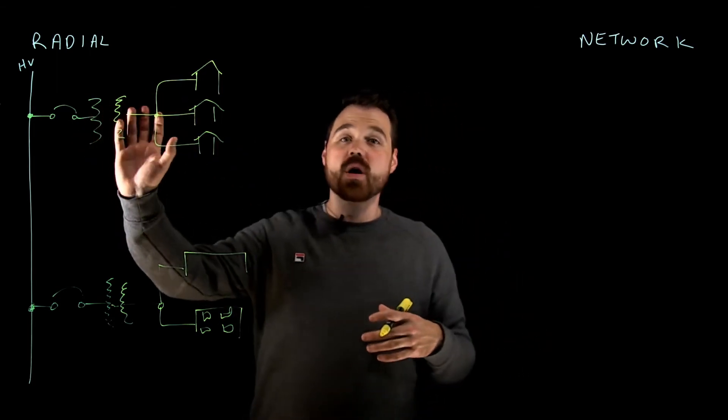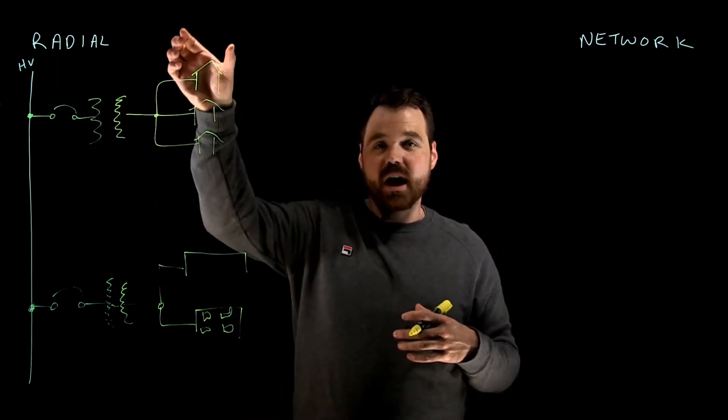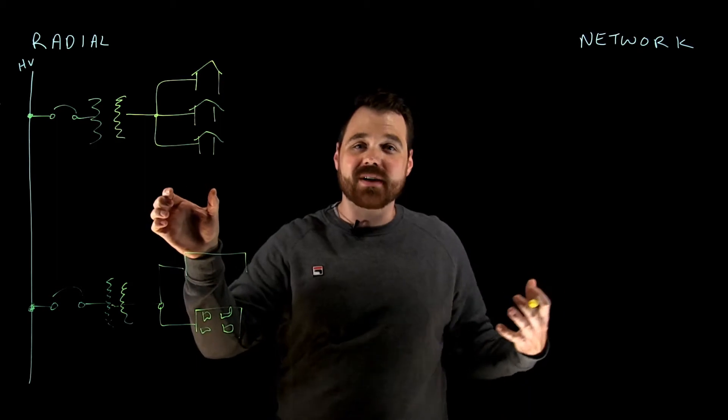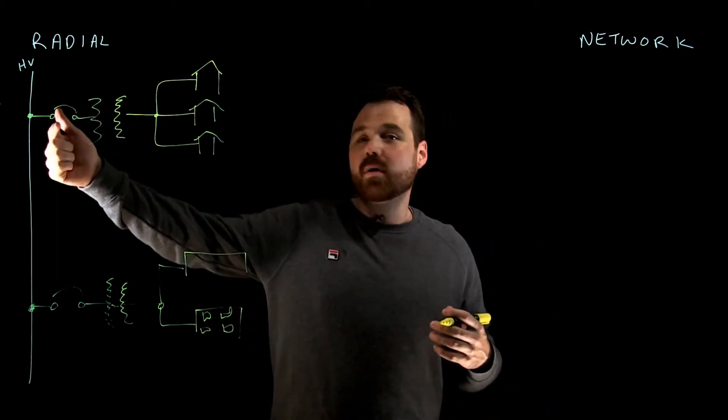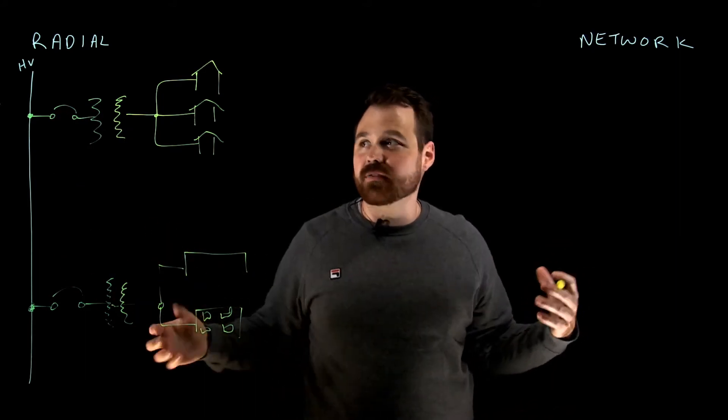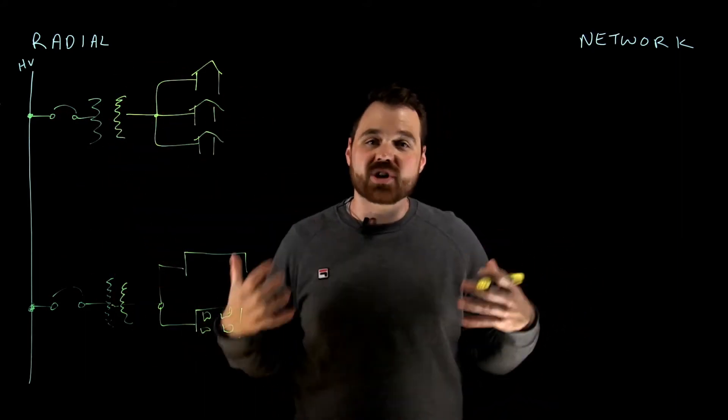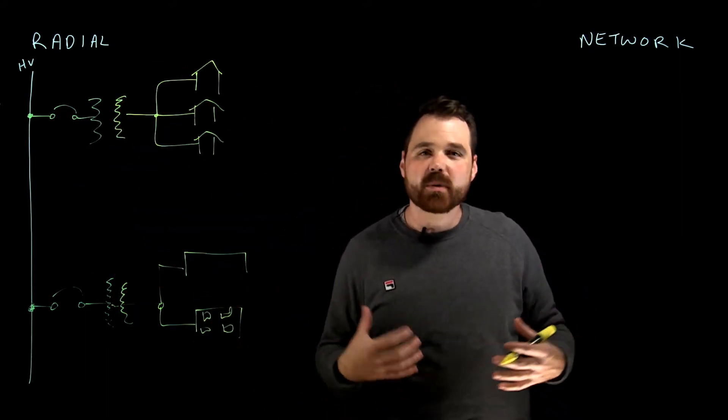Now the idea here being, if something goes wrong with this transformer, unfortunately, everybody that's connected on the secondary of that transformer is going to lose power. If they need to work on that transformer, when they open the primary protection device, everybody on the secondary is going to lose power. So you can see a little bit more power outages.